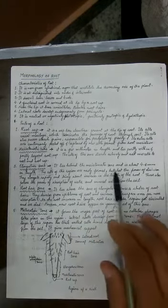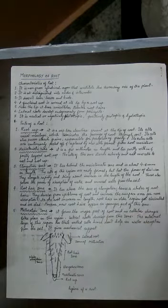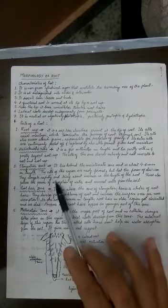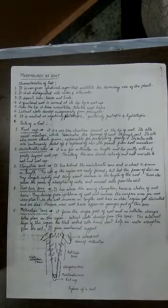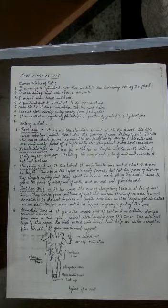The elongation zone lies just behind the meristematic zone and is four to eight millimeters long. The cells of this region are newly formed but have lost the property of division due to differentiation, because they will become part of different portions of the root. They elongate rapidly and bring about an increase in the length of the root.